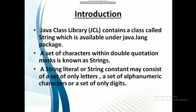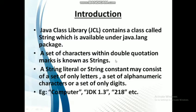A string can be only a set of letters — only characters. It can also be alphanumeric characters, for example a combination of digits as well as letters. Or it can be only digits. For example, 'computer' is only letters, 'jdk1.3' contains letters as well as numbers so it is alphanumeric, and '218' is only digits but since it is mentioned inside double quotation marks it acts as a string.